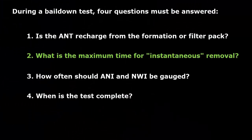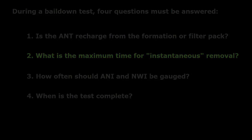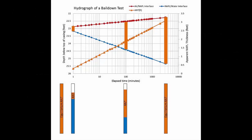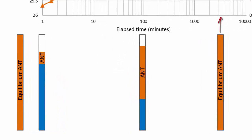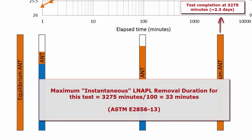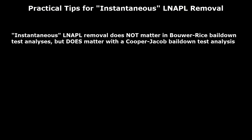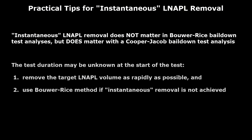What is the maximum time for instantaneous LNAPL removal? This bail-down test hydrograph shows that complete recharge occurred at 3,275 minutes. Instantaneous LNAPL removal is defined as one one-hundredth or less of total test time — about 33 minutes for this test. Instantaneous LNAPL removal is not critical for Bauer and Rice analyses, but does matter for Cooper-Jacobs analyses. Since test duration is often unknown at the start, remove the target LNAPL volume as rapidly as possible and use the Bauer and Rice method if instantaneous removal is not achieved.